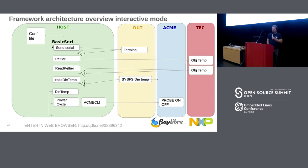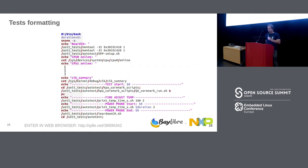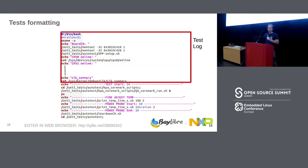This is an overview of the interactive mode. We are controlling everything from the host side using this configuration file. From the host, you can control the device under test, get the die temperature from the CCFS, talk with the ACME to do an on/off, and communicate with the regulator to send new commands to reach new temperatures.